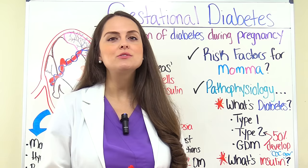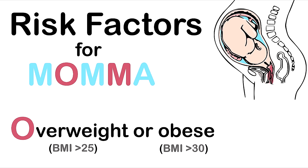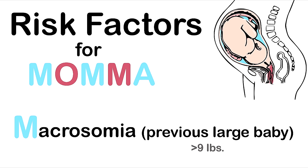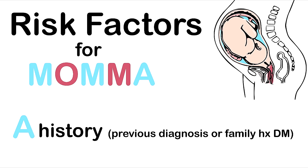To help us remember those risk factors for exams, we're going to remember the word MAMA, because we're talking about risk factors for mama. M is for maternal age over 25. O is for overweight or obese — we're talking about a BMI, a body mass index — overweight is greater than 25 and obese is greater than 30. M is for macrosomia, a large baby for its gestational age, specifically if she has previously had a baby larger than nine pounds. The other M is for multiple pregnancies, and A is for a history — specifically a previous diagnosis of gestational diabetes or a family history of diabetes.